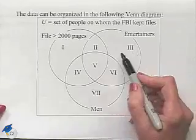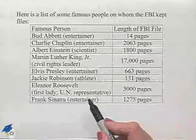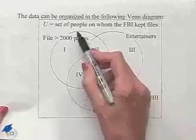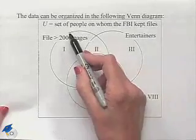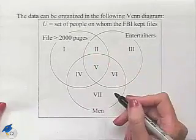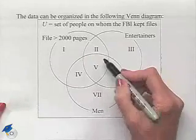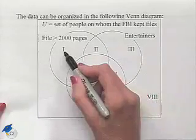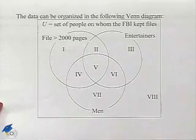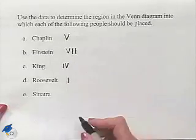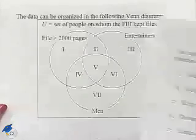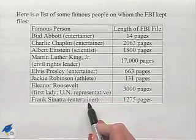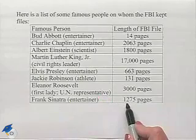Now we're going to look at Eleanor Roosevelt. Eleanor Roosevelt was not a man and not an entertainer. Her file was 3,000 pages long, so she needs to be included in the circle where the file is greater than 2,000 pages. She cannot be part of the circle for entertainers or the circle for men. In fact, she's going to end up in region one.